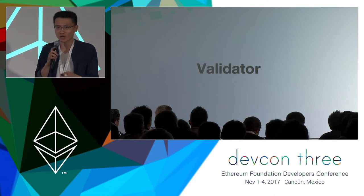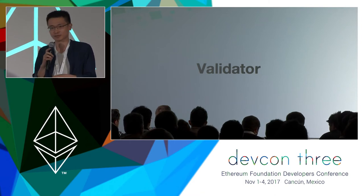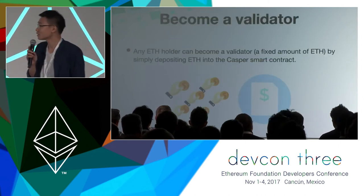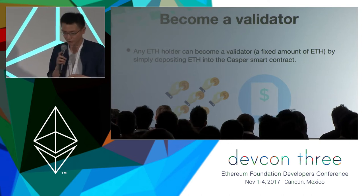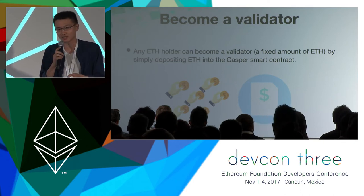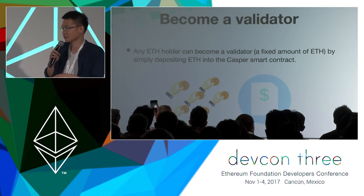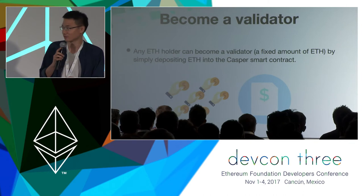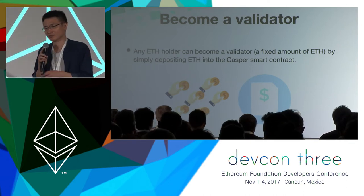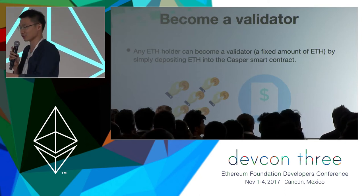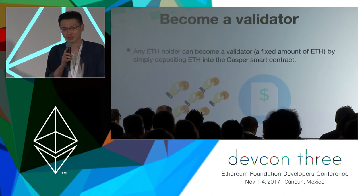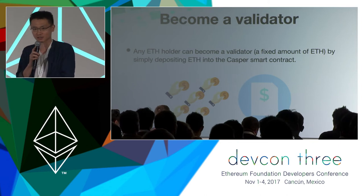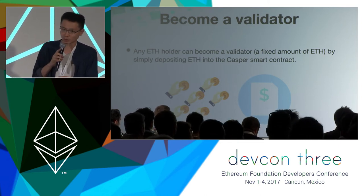So what is a validator and how do you become a participant in CASPER? If you want to run in CASPER, you need to become a validator. Any ETH holder can become a validator — for example, if we set a fixed threshold like 5,000 ETH, you can become a validator by sending a request message to the smart contract and putting your money inside. The smart contract will record your signature and how many deposits you put in, which can be used to reward or penalize you.